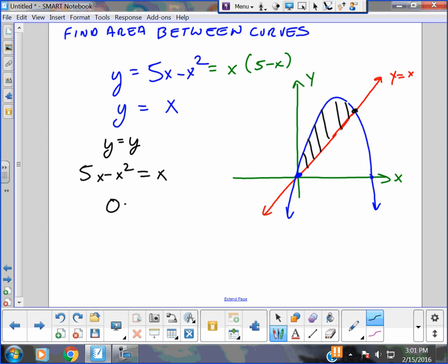If I get everything on one side, I get x squared minus 4x. If I factor this, there are two points of intersection, 0 and 4.